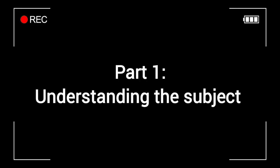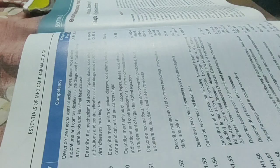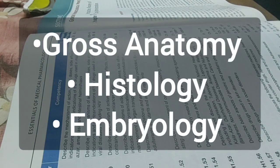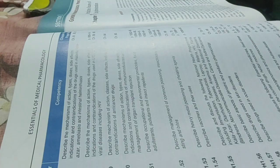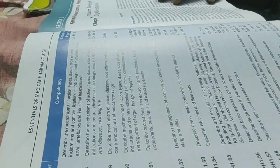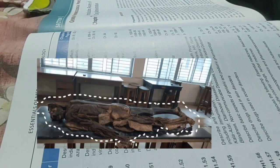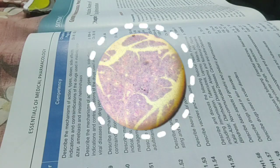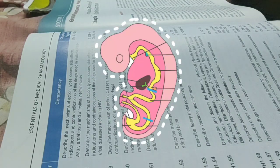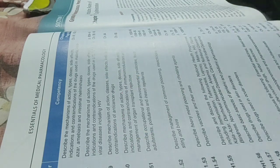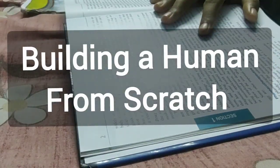First, let's understand the subject. Anatomy has three main parts: gross anatomy, histology, and embryology. Gross tells you what you can see and touch in the dissection hall. Histology shows you what's under the microscope, and embryology tells you how it all began. If you connect these three, you will realize anatomy is like building a human from scratch.